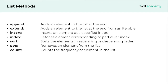Now let us understand the different list methods in Python. Lists support many different methods. The append method adds an element to the list at the end. The extend method is very much similar to append — it also adds elements to the list at the end, but from an iterable. The data type from which we are adding elements must be iterable, such as strings, lists, tuples, sets, dictionaries, or even the range function.